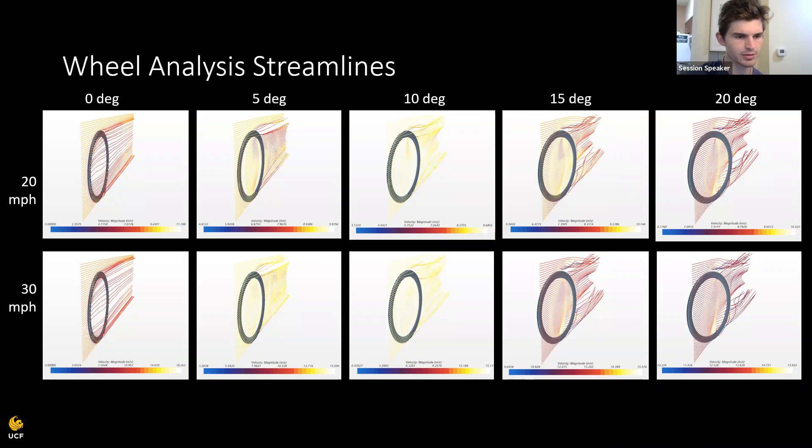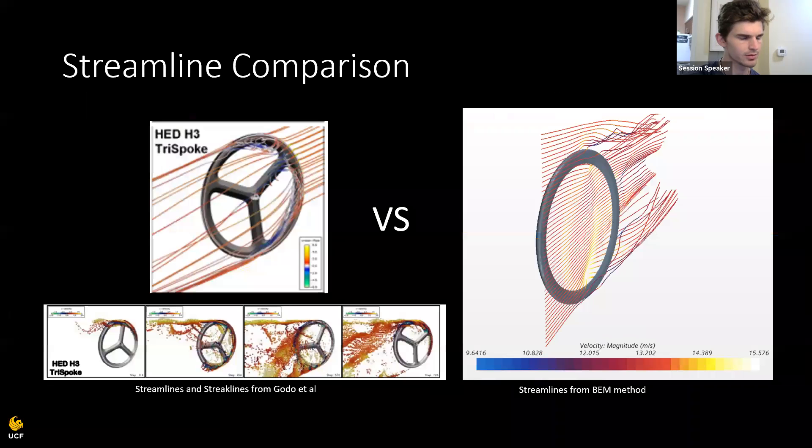Now, if we compare these streamlines to Matthew Godo's streamlines, which are also from a transient study, as we discussed, you see this high frequency turbulent wake that definitely contributes to the drag forces. And especially with these streak lines, you see these high frequency shedding and these high frequency effects that just aren't present enough in the blade element momentum model that we used.